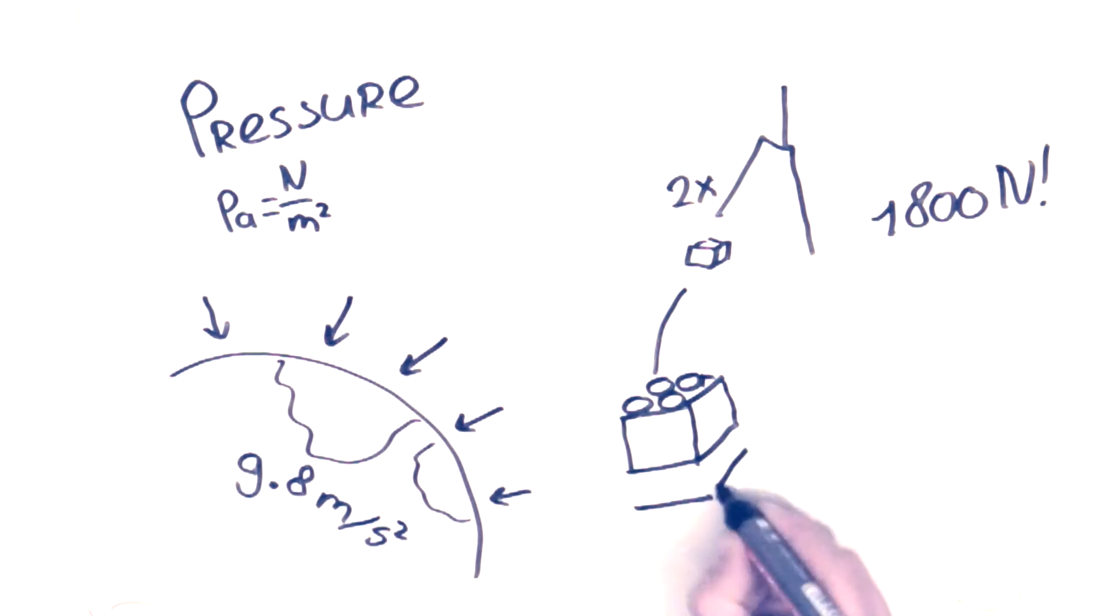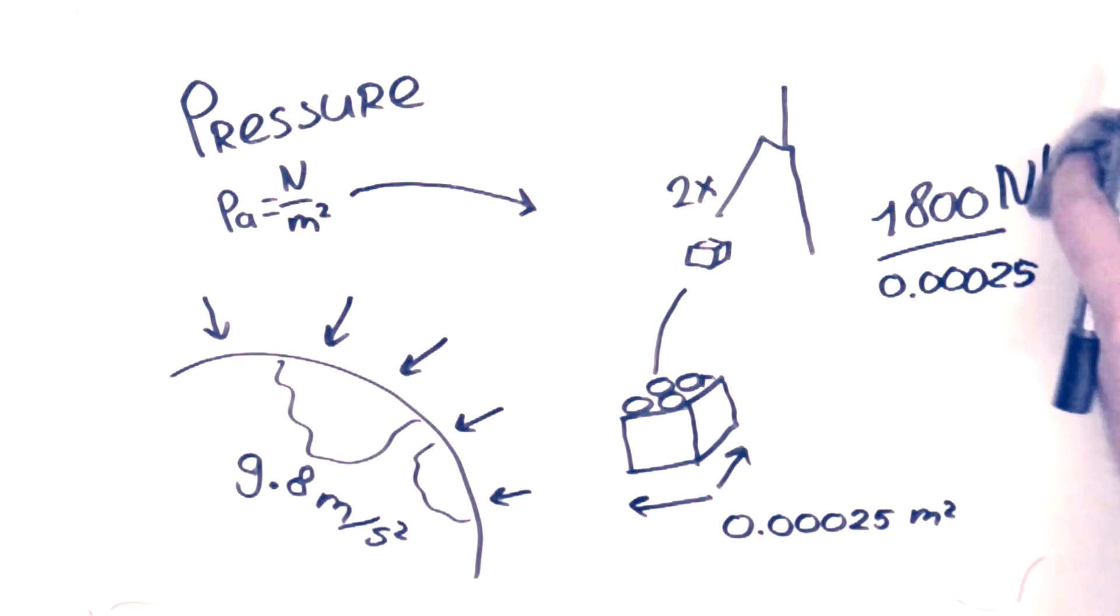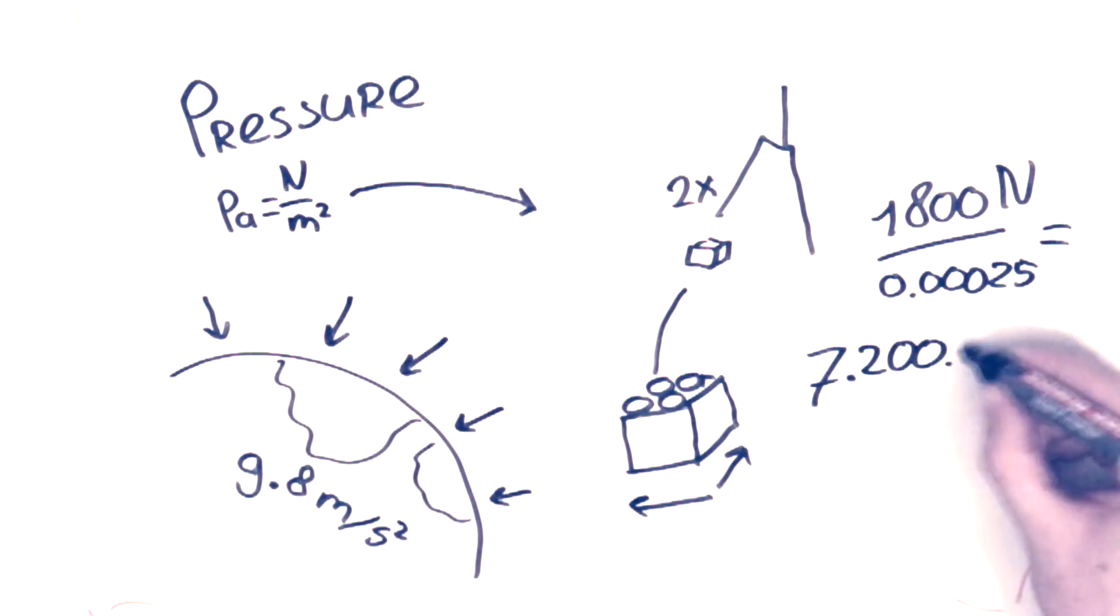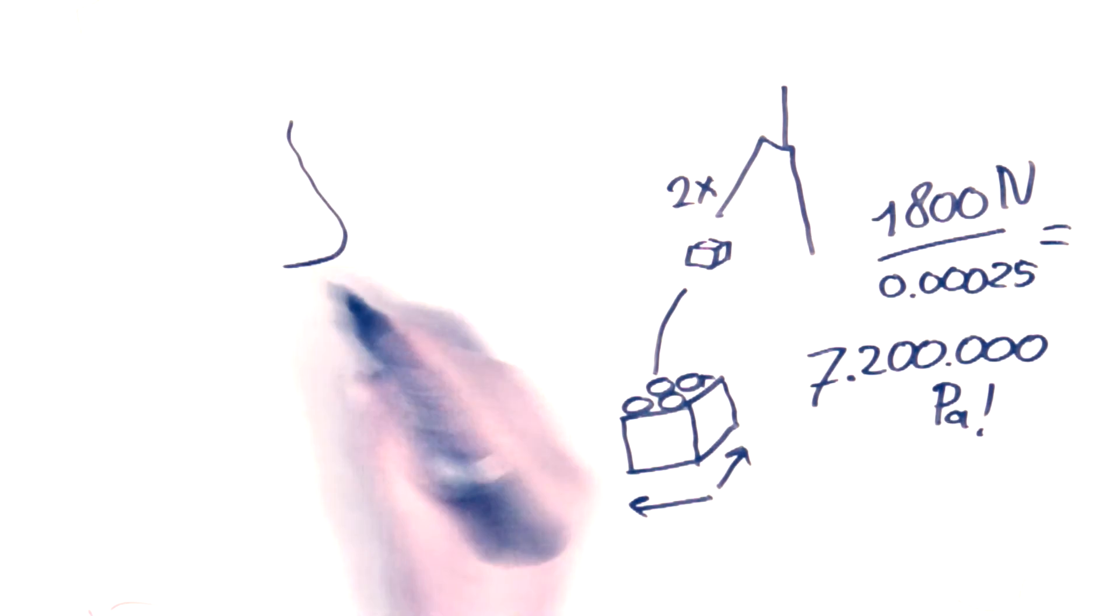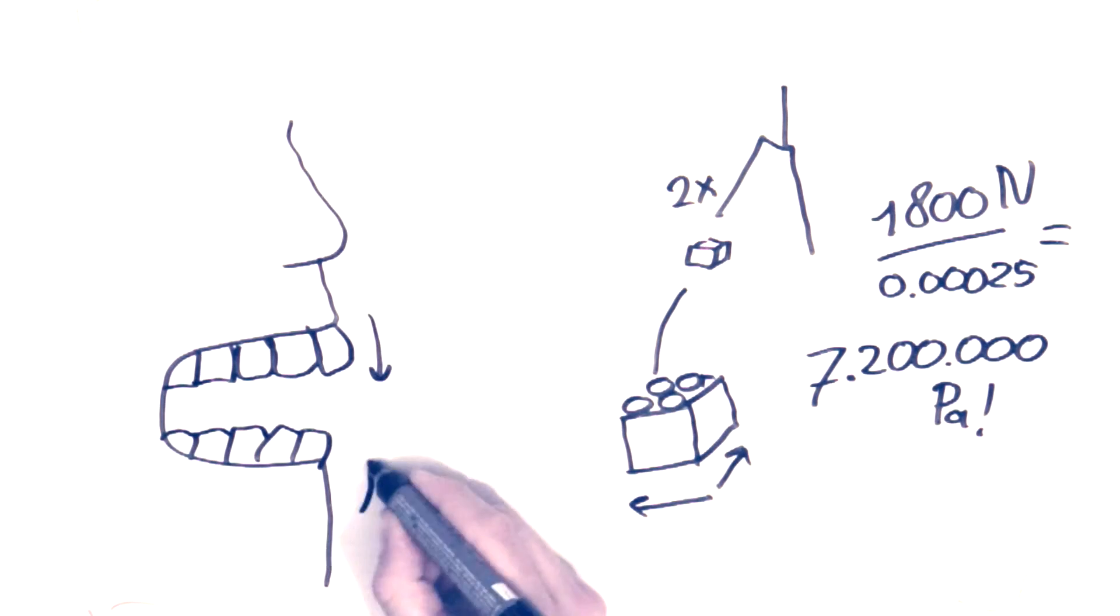The reason it hurts like hell is that all this force is applied to a very small area. A 2x2 Lego brick has an area of 2.5 centimeters squared. And this is the best case scenario if we hit it dead on and ignore the 4 small knobs. Now we can calculate the pressure if we divide the force by the area. This comes down to 7.2 million pascal or 7.2 megapascal. Did you know that the biting force of a human being is about 1.1 megapascal? So it's 7 times the human bite when you step on a brick of Lego.